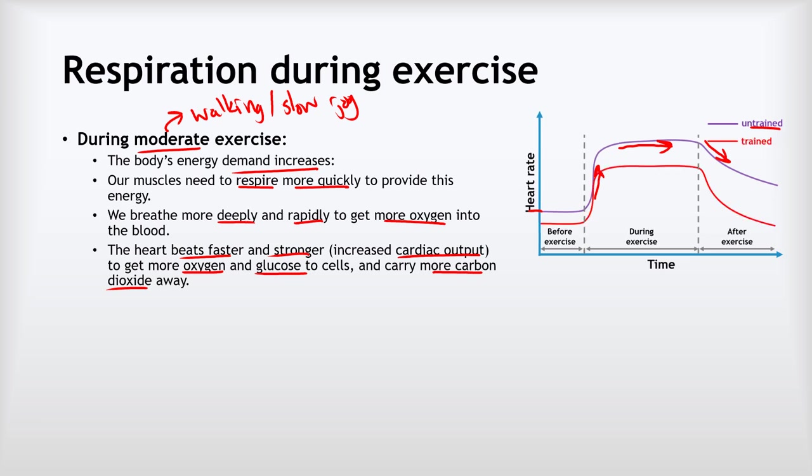Comparing to a trained person — someone who regularly exercises and challenges their heart — their heart becomes stronger. Their resting heart rate is lower than an untrained person's because their heart pumps more blood with each beat, achieving the same cardiac output at a lower heart rate. During exercise their heart rate rises but not as high, and after exercise it returns to normal more quickly because their heart is stronger.